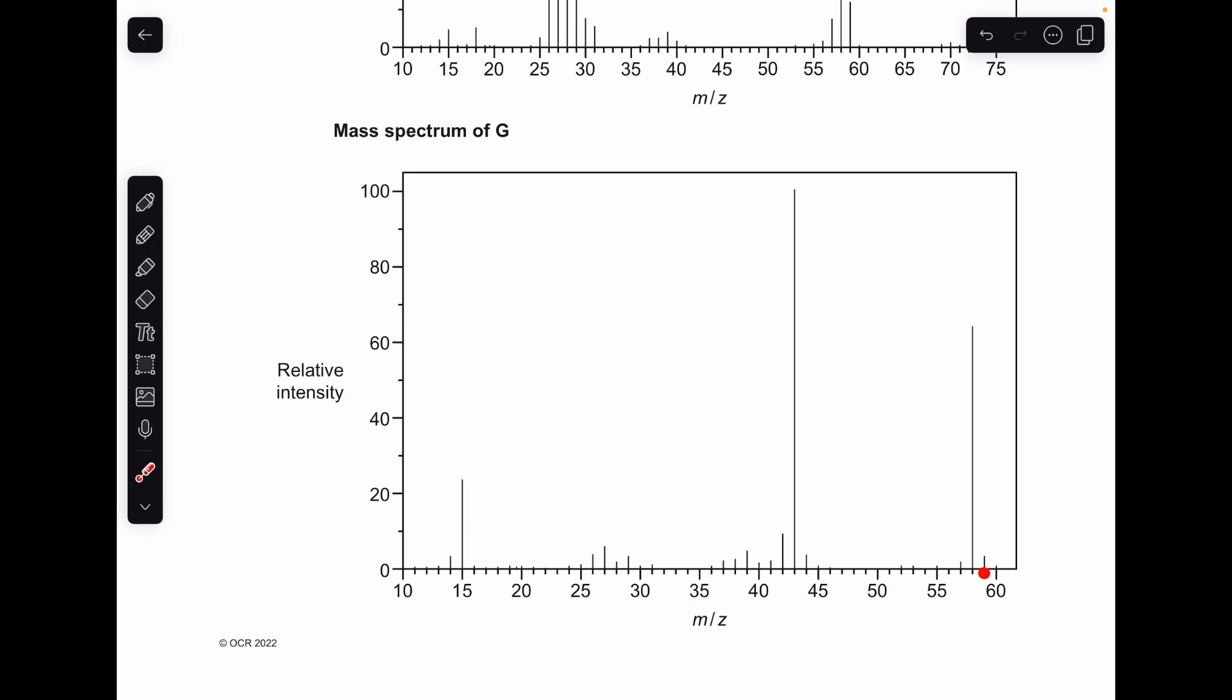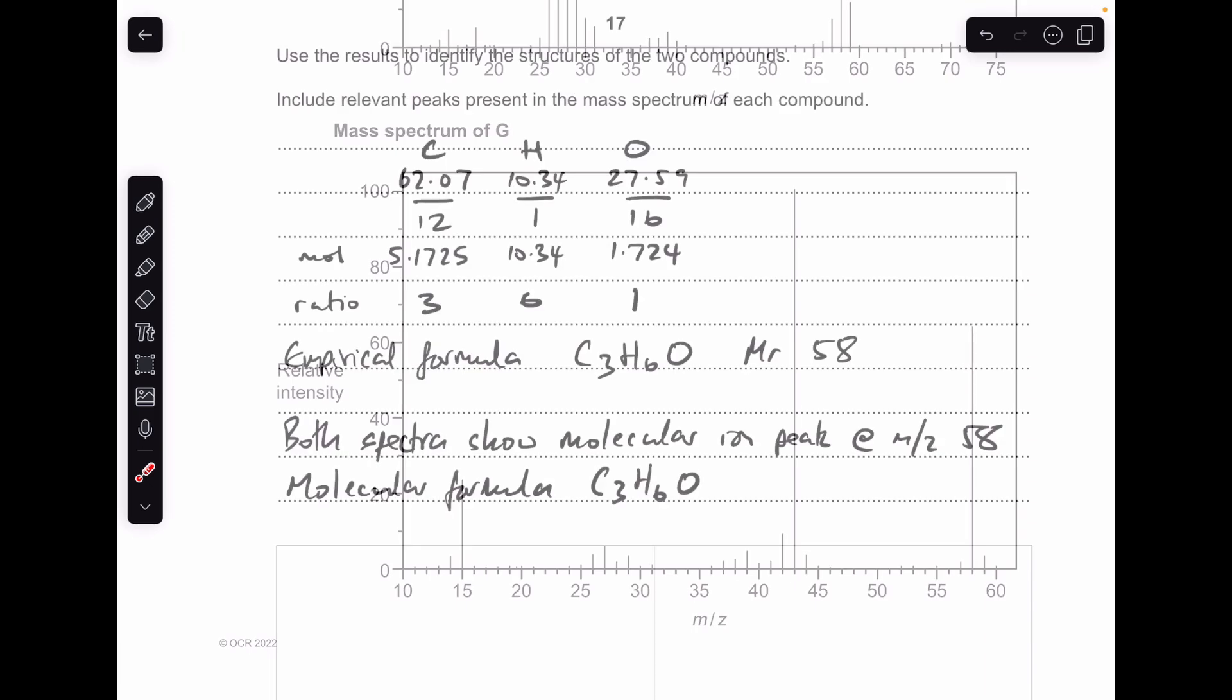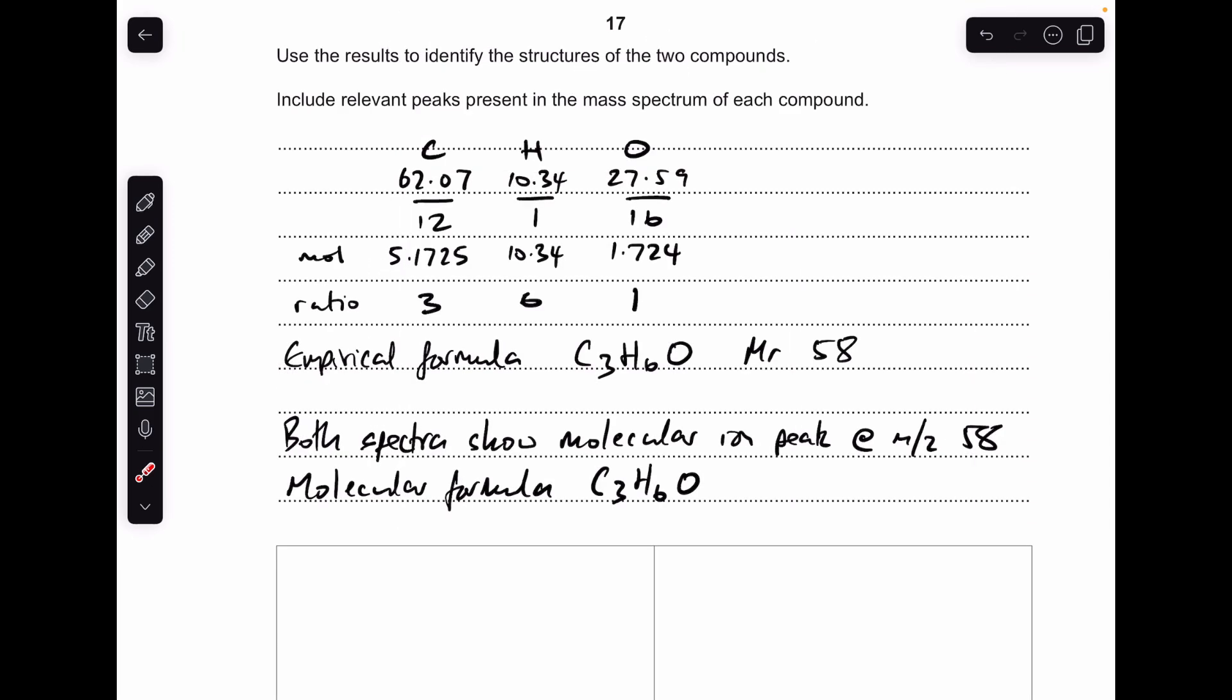Remember these peaks that are just one or two units higher than the molecular ion peak, they're due to the presence of isotopes. So we now know that the MR is 58 of both molecules, so that means the molecular formula is the same as the empirical formula. So I would just get that into my answer like this: Both spectra show a molecular ion peak at m/z 58, therefore the molecular formula is also C3H6O.